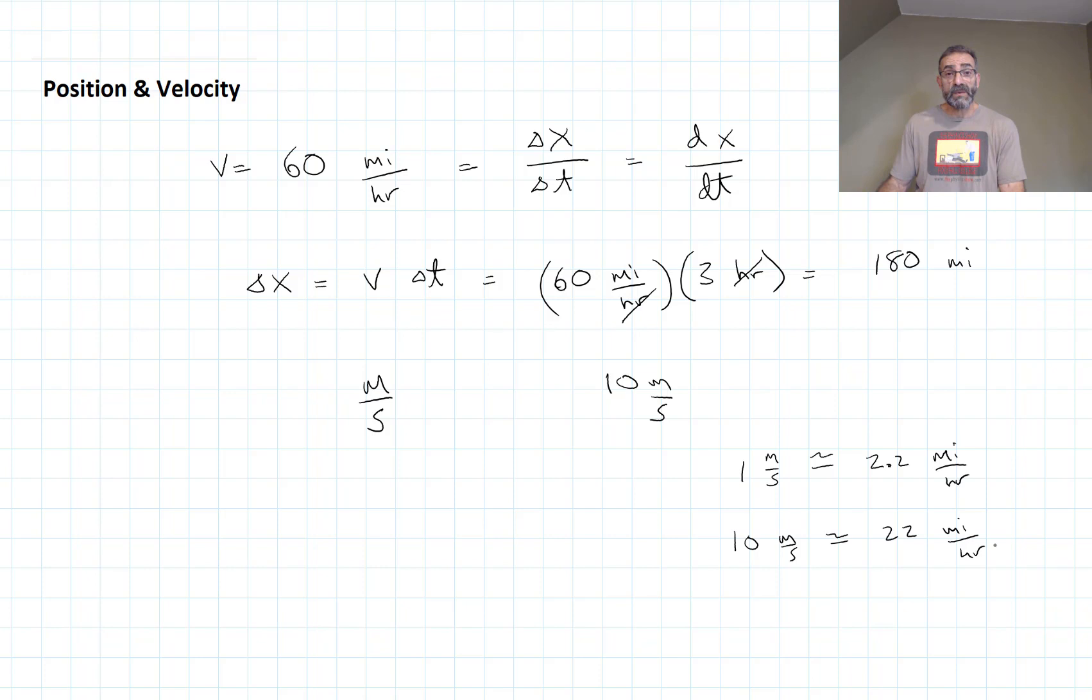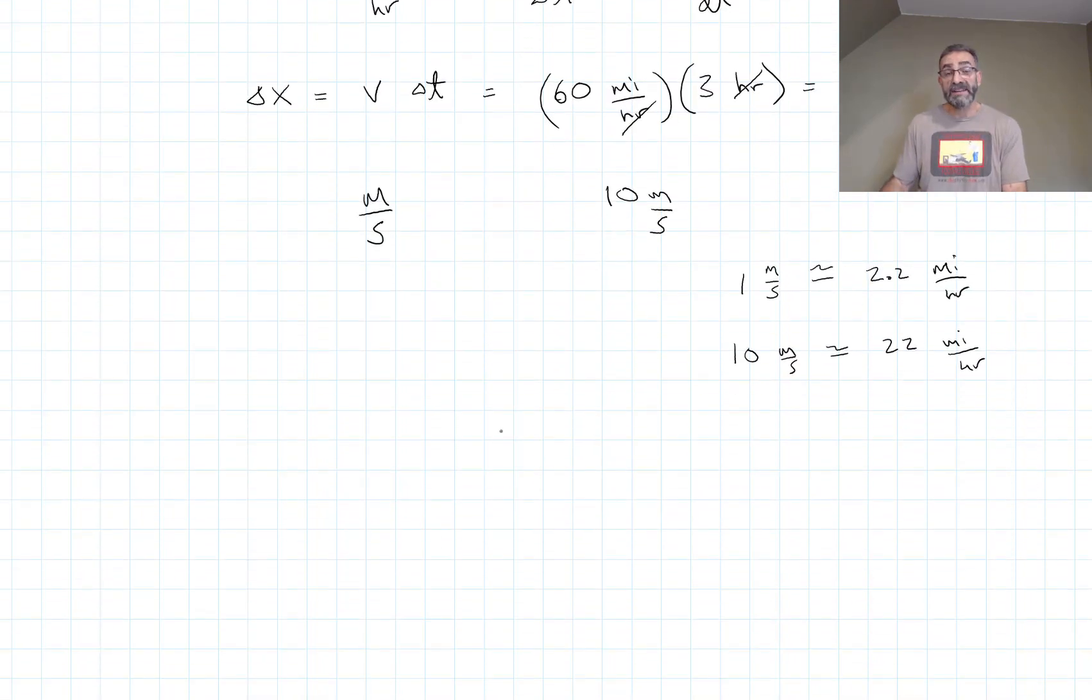If I were to run - of course, I can't run anywhere near 10 meters per second. Let's pretend I can run at 5 meters per second. If I'm running at 5 meters per second and I start at x equals 30, the 30-meter mark on a football field, and I'm running in the positive x direction, where will I be after 5 seconds?